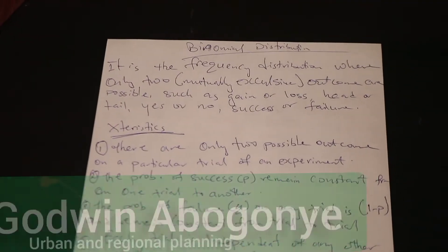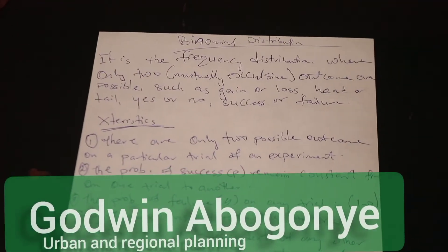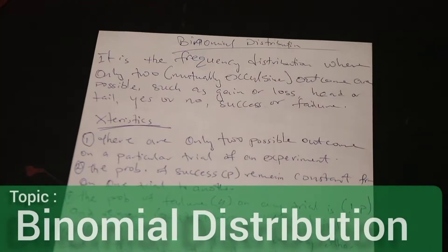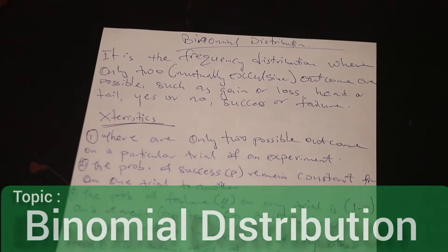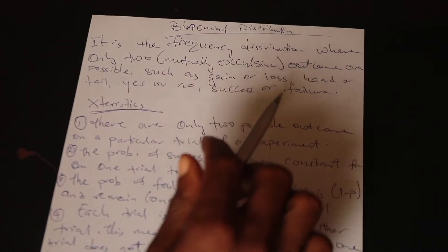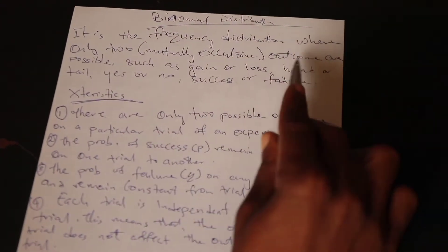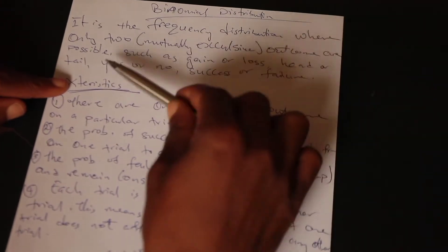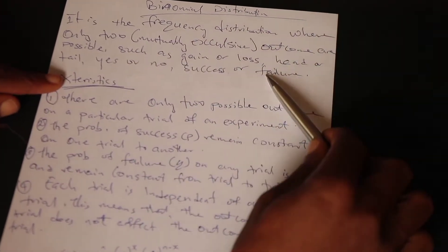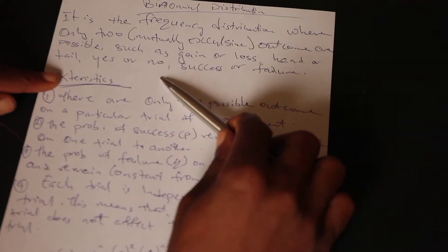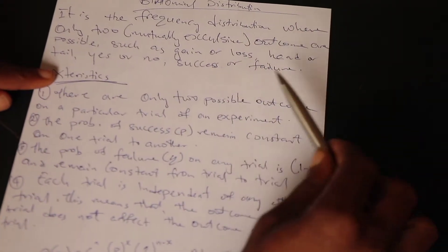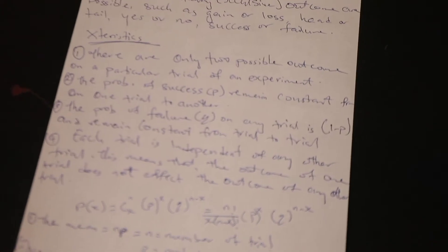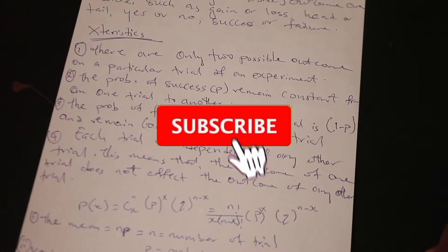Hello guys, once again welcome to my channel, my name is Gordon Abogony. In this tutorial we're going to be discussing binomial distribution. Binomial distribution is the frequency distribution where only two mutually exclusive outcomes are possible, such as gain or lose, head or tail, yes or no, success or failure.